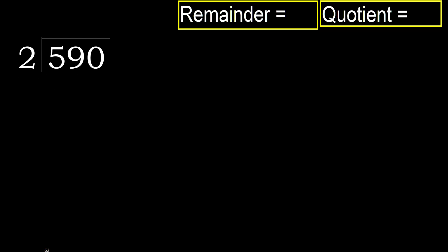590 divided by 2. 5 is not — let's therefore start with 5. 2 multiplied by which number is nearest to 5 but not greater? 2 multiplied by 3 —